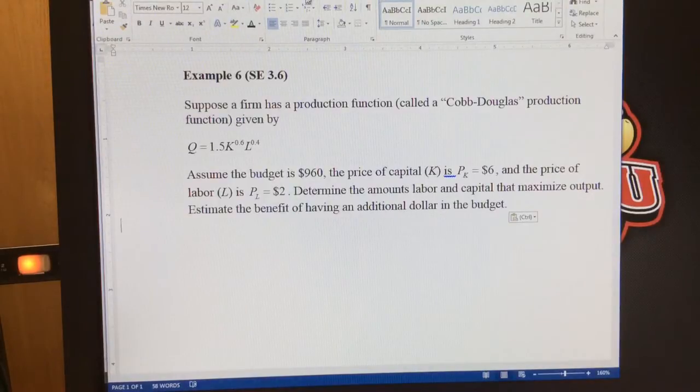So this is our final example for constrained optimization. Let's look at a firm that's trying to produce something. The production function is given by Q equals 1.5 times K, which is capital meaning machines, to the 0.6 power, times labor, which is people working, to the 0.4 power.